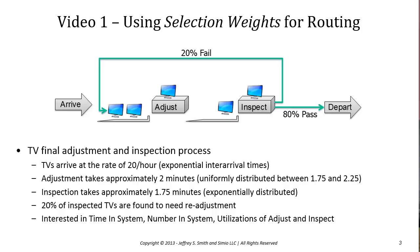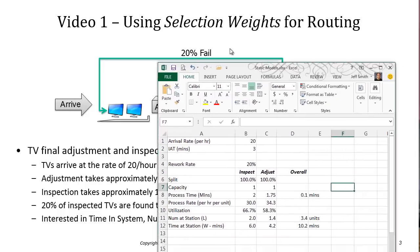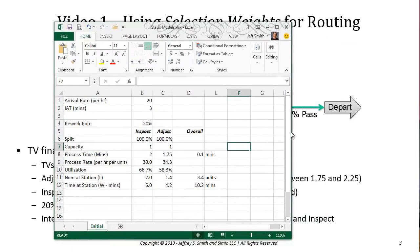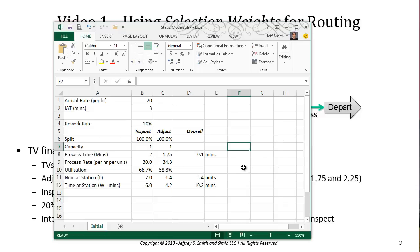Before we start building our initial model, I want to look at a static model we can use to answer our verification question. Recall that verification is the process where, once we complete the model, we ensure it behaves as we expect. For this model we're going to use a standard tandem queuing model with an arrival rate of 20 per hour, corresponding to an inter-arrival time of three minutes, along with processing rates, utilizations, and waiting times.